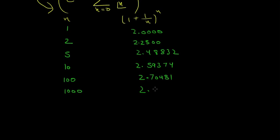When n is 10,000, its value is 2.71815. See, we are getting closer to this number.